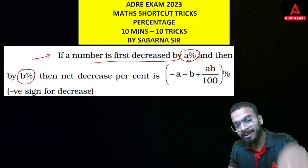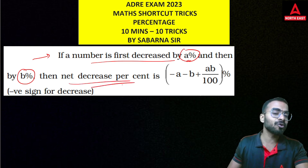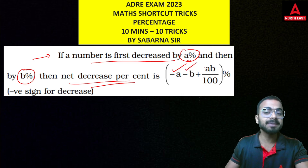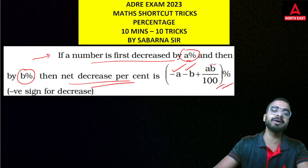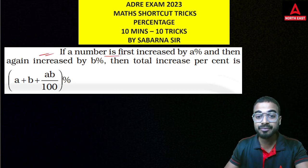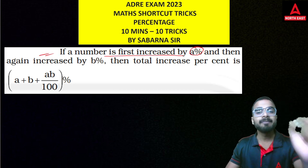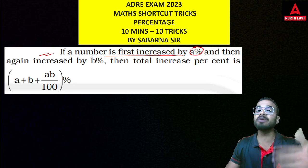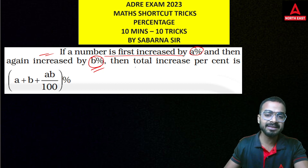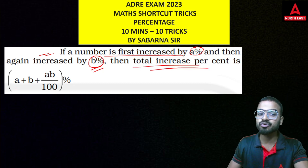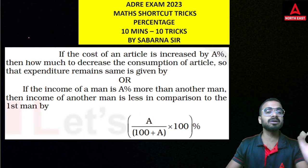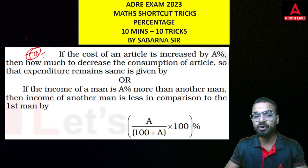Then the percentage change will be increased by a percent: a minus b plus ab by 100%. That's the shortcut trick. First increase by a percent, then start with b percent — you get a plus b plus ab by 100%. That's how you get the answer using this shortcut trick.